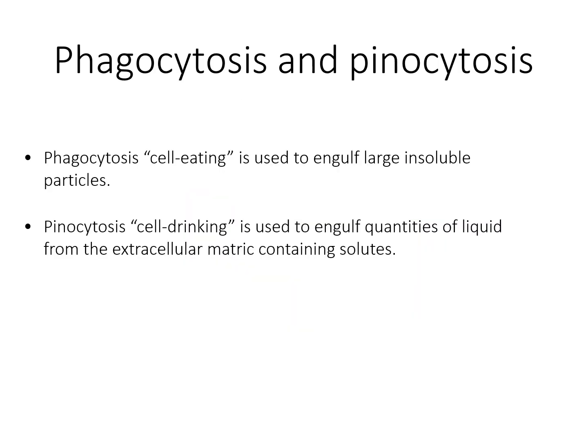Phagocytosis is referred to as cell eating and is used to engulf large insoluble particles. This occurs in many cell types, but only professional phagocytes such as immune cells do it efficiently. Pinocytosis is referred to as cell drinking and is used to engulf quantities of liquid from the extracellular matrix containing solutes. In both cases, importation into the cell creates an intracellular vesicle consisting of a spherical phospholipid bilayer.